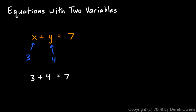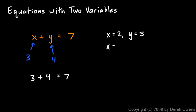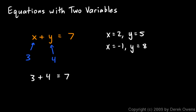You can probably see that there are other solutions too. We could say x equals 2 and y equals 5, because 2 plus 5 equals 7. Or we could say x equals negative 1 and y equals 8, because negative 1 plus 8 equals 7. So how many different solutions are there? There are really an infinite number of solutions — lots of different pairs of x and y values can satisfy that equation.